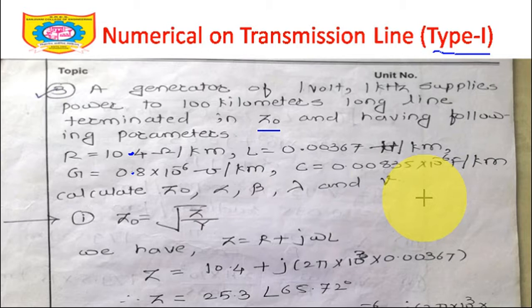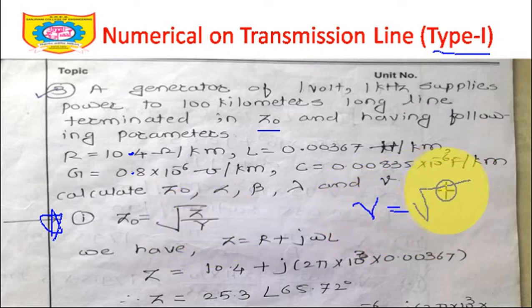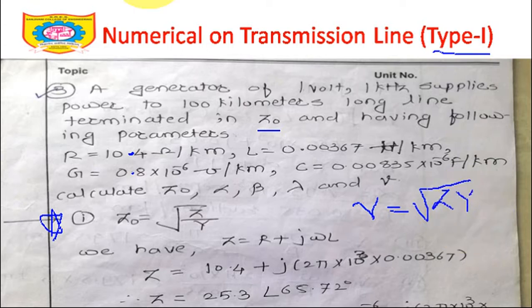We need to calculate Z0, alpha, beta, lambda, and V. Only two formulas are required: Z0 = √(Z/Y) and gamma = √(Z·Y). If you remember these two formulas, you can solve both Type 1 and Type 2 numericals on primary and secondary constants of the transmission line.